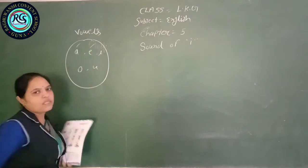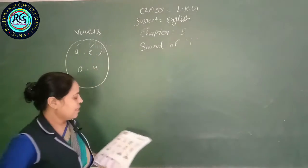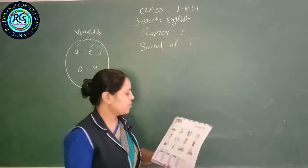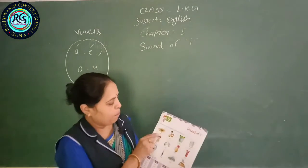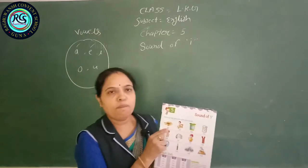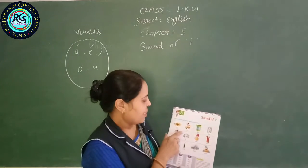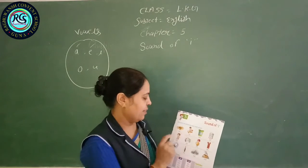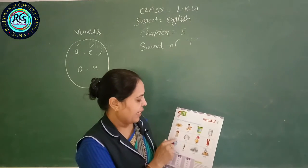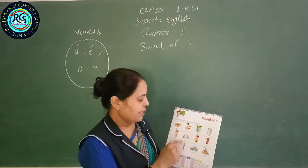Now we will look at the vowel I. P, I, T — Pit. S, I, T — Sit. K, I, T — Kill.